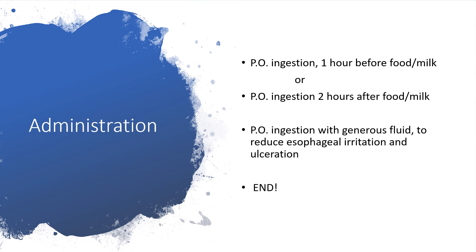Administration: demeclocycline can be given orally, one hour before food or milk, or two hours after food or milk. In other words, do not give demeclocycline at the same time as food or milk. Each oral dose should be taken with generous fluid — have the patient drink lots of water — to reduce esophageal irritation and esophageal ulceration. Some people develop dysphagia secondary to oral pill administration.